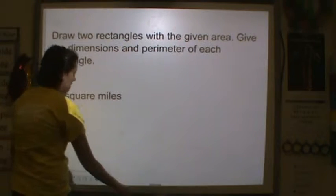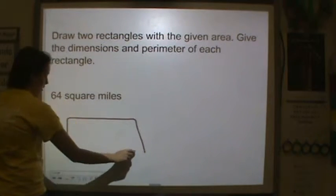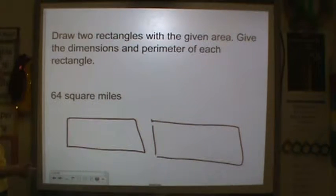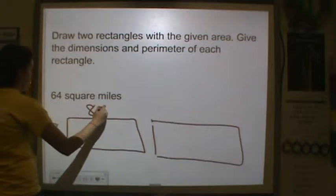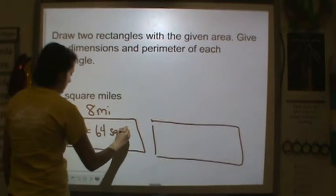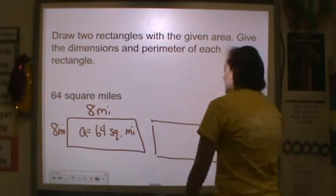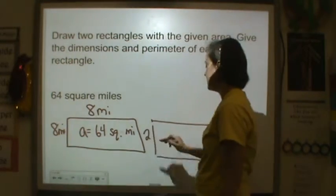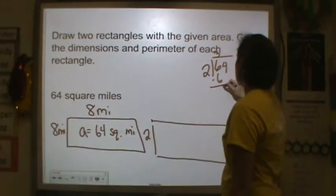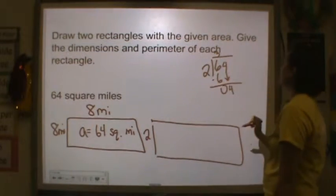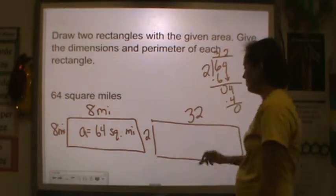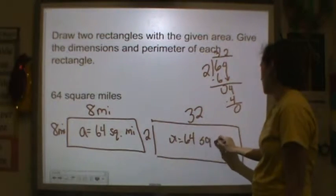Same directions. Let's try this one. 64 square miles. So remember, we have to do 2. So factors of 64. I know 8 times 8 is 64, so 8 miles and 8 miles. That would give me an area of 64 square miles. And let's do 2, because I know that it's an even number. So 64 divided by 2. How many 2s are in 6? 3. Multiply. Subtract. Bring down. How many 2s are in 4? 2. Multiply. Subtract. No remainder. So that works. 32. So area is equal to 64 square miles.